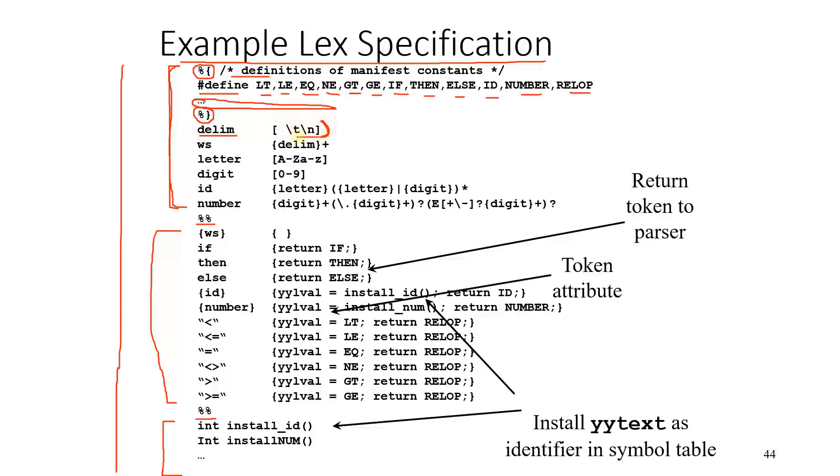Now there are some extra definitions like delim, which tells us that these are the escape sequences. WS, that is the white spaces, that is the delim repeated plus, meaning it's repeated regular expression plus. For a letter, it has to lie between capital A to capital Z or small a to small z. Same goes for digit, zero to nine.